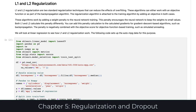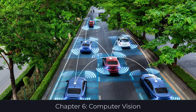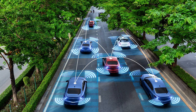Chapter 5 introduces regularization and dropout, which will allow your neural networks to combat overfitting and achieve greater accuracy. Computer vision is one of the areas in which neural networks are truly changing the world, providing insights into images.